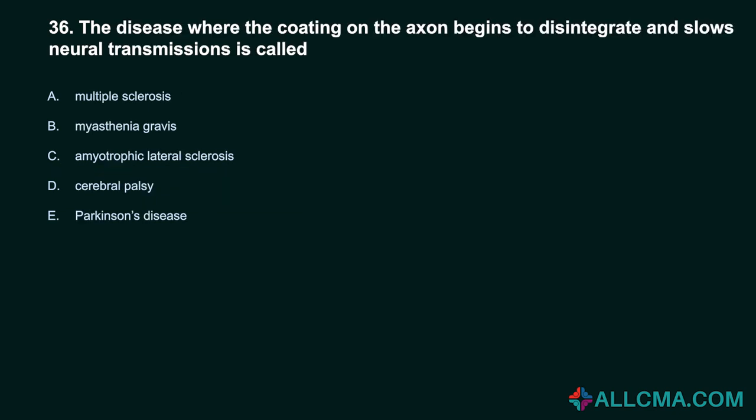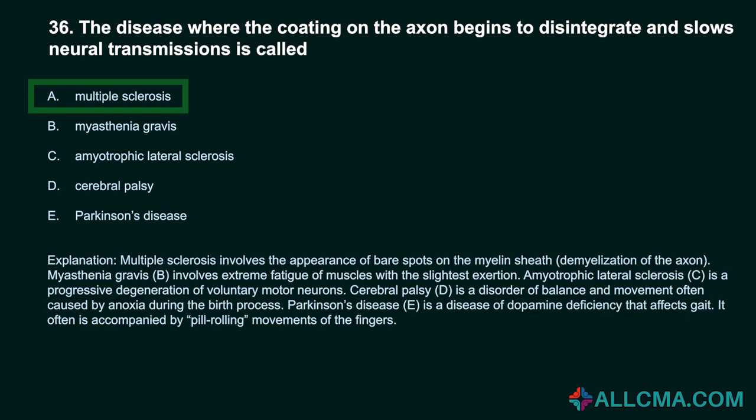Question 36: The disease where the coating on the axon begins to disintegrate and slows neural transmissions is called: A. Multiple sclerosis. B. Myasthenia gravis. C. Amyotrophic lateral sclerosis. D. Cerebral palsy. E. Parkinson's disease. Correct answer: A. Multiple sclerosis. Multiple sclerosis involves the appearance of bare spots on the myelin sheath — demyelination of the axon. Myasthenia gravis involves extreme fatigue of muscles with the slightest exertion. ALS is a progressive degeneration of voluntary motor neurons. Cerebral palsy is a disorder of balance and movement often caused by anoxia during the birth process. Parkinson's disease is a dopamine deficiency affecting gait, often accompanied by pill-rolling movements of the fingers.